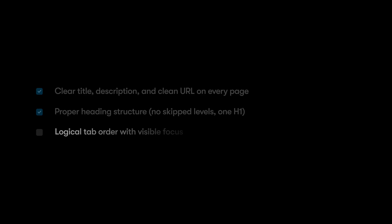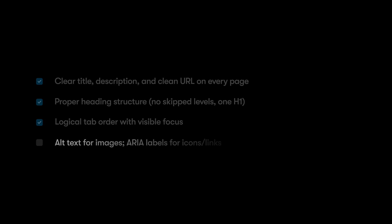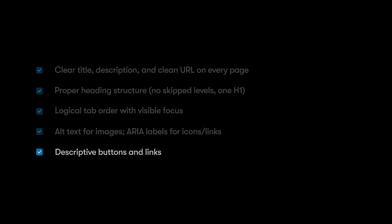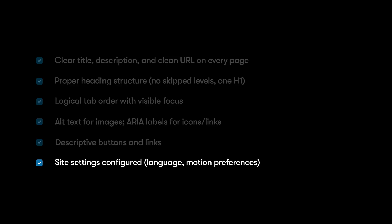Here are some things we want to check before going live. Does every page have a clear title, a concise description, and a clean URL? Are headings used in the right order with no skipped levels or misplaced H1s? Can we tab through the page in a logical way without losing track of focus? Are all images tagged with alt text, and are icons or graphics links labeled with ARIA? Do buttons and links clearly describe what they do? And are the site settings like language and motion preferences properly configured?